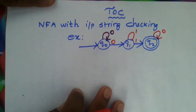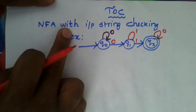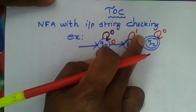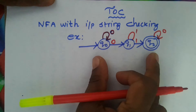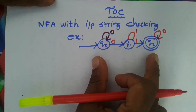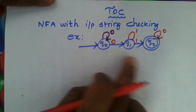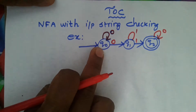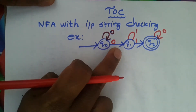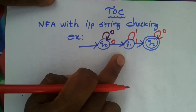Today we are going to discuss the subject Theory of Computation. The topic is NFA with input string checking. If the input diagram is given as an NFA transition diagram, we will see how one input is accepted by this finite automata transition diagram.